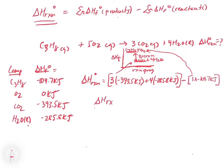Doing the math, we get ΔH of reaction = −2219 kJ. This shows the setup and calculation. The ΔHf values allow us to find where each line sits in the enthalpy diagram, and their difference gives us the overall enthalpy of reaction.